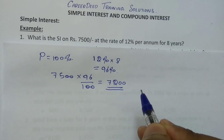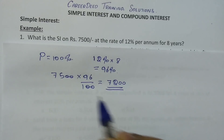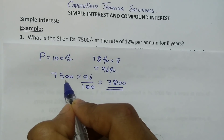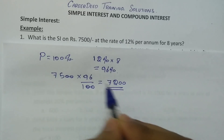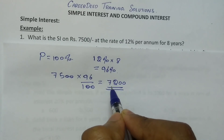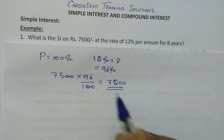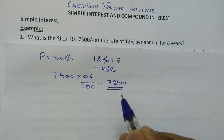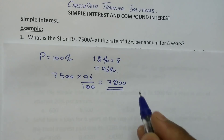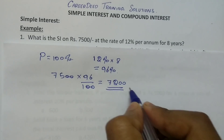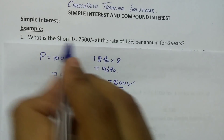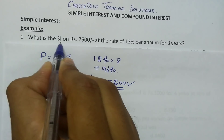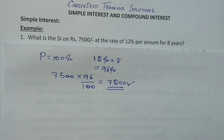So totally you have to pay back the Rs.7500 principal plus Rs.7200 interest, which is Rs.14700 at the end of 8 years. But since the question asks only for the simple interest, the answer is Rs.7200.